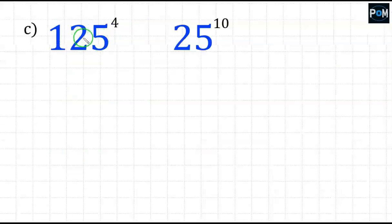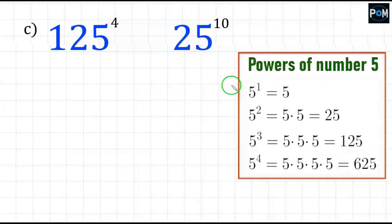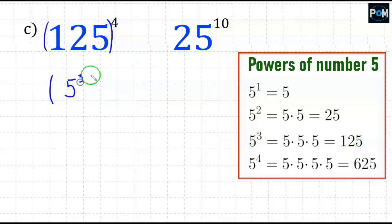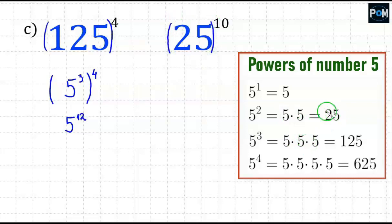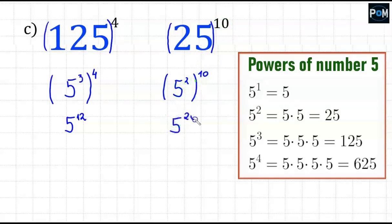In example C, we have 125 to the 4th power and we need to see if it's greater or less than 25 to the 10th power. These two numbers, 125 and 25, will turn out to be powers of 5. Looking at the auxiliary table, 125 is the same as 5 to the 3rd power. So I have 5 to the 3rd power inside the parenthesis and to the 4th power outside — multiplying gives 5 to the power of 12. For the other side, 25 is 5 to the power of 2, and to the 10th power as well. Multiplying 2 and 10, I get 5 to the power of 20. Comparing, there's definitely more on the side of 5 to the 20th, so 25 to the power of 10 is really a lot more than 125 to the power of 4.